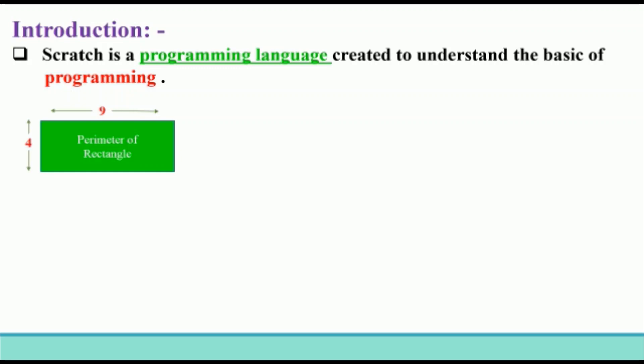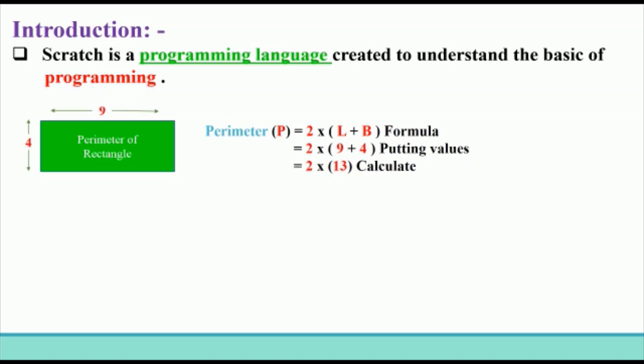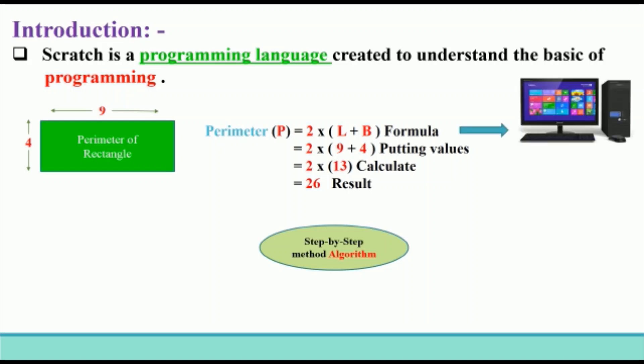Suppose you are given a task to find out the perimeter of a rectangle whose length is 9 and breadth is 4. The first step is to write the formula of perimeter, next putting the values of length and breadth, then calculating the values, and finally getting the result. This step-by-step method of solving a problem by breaking it down into simple steps is called an algorithm.